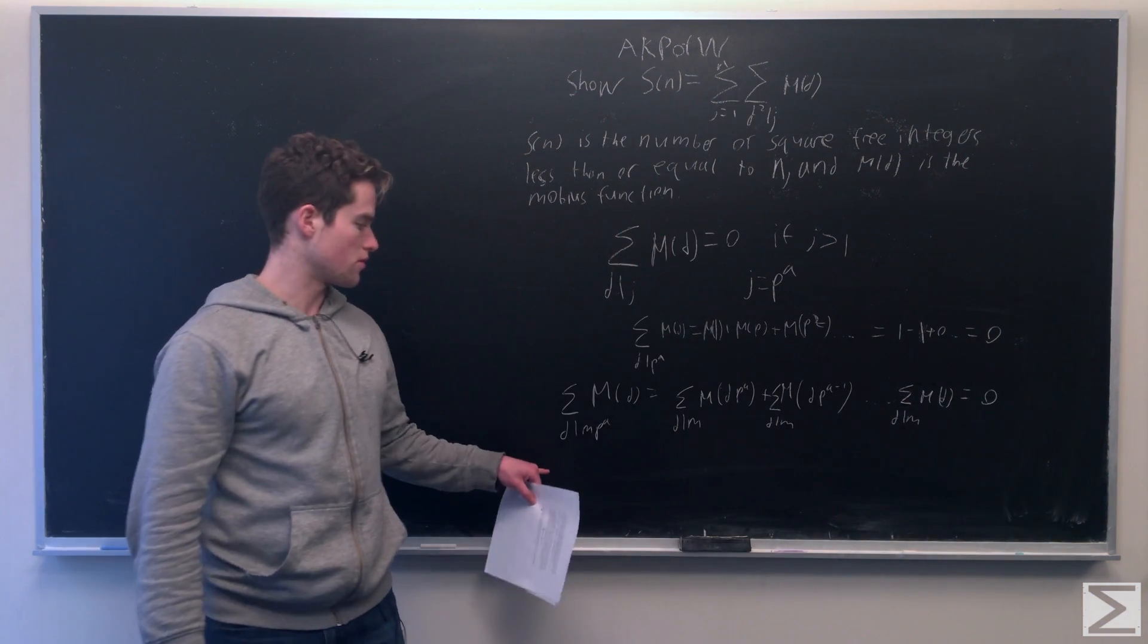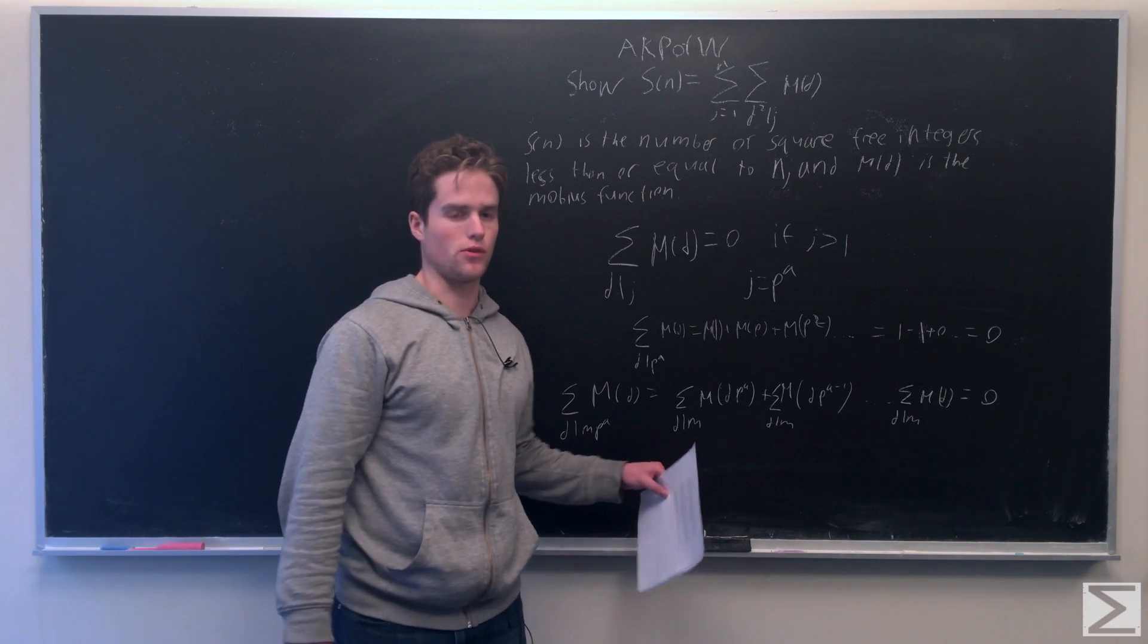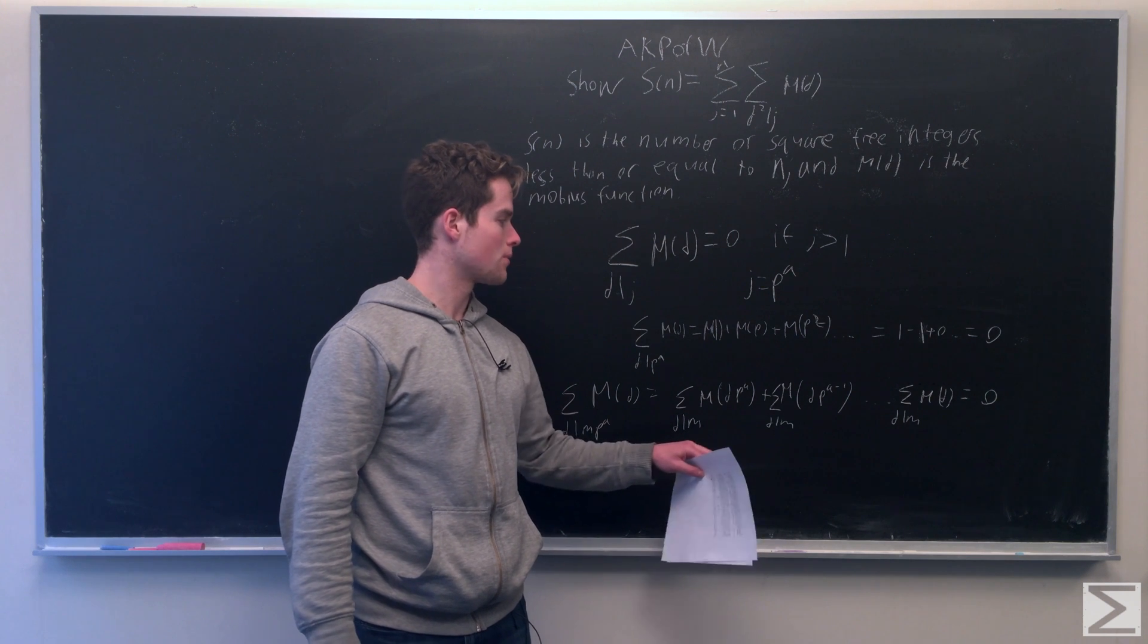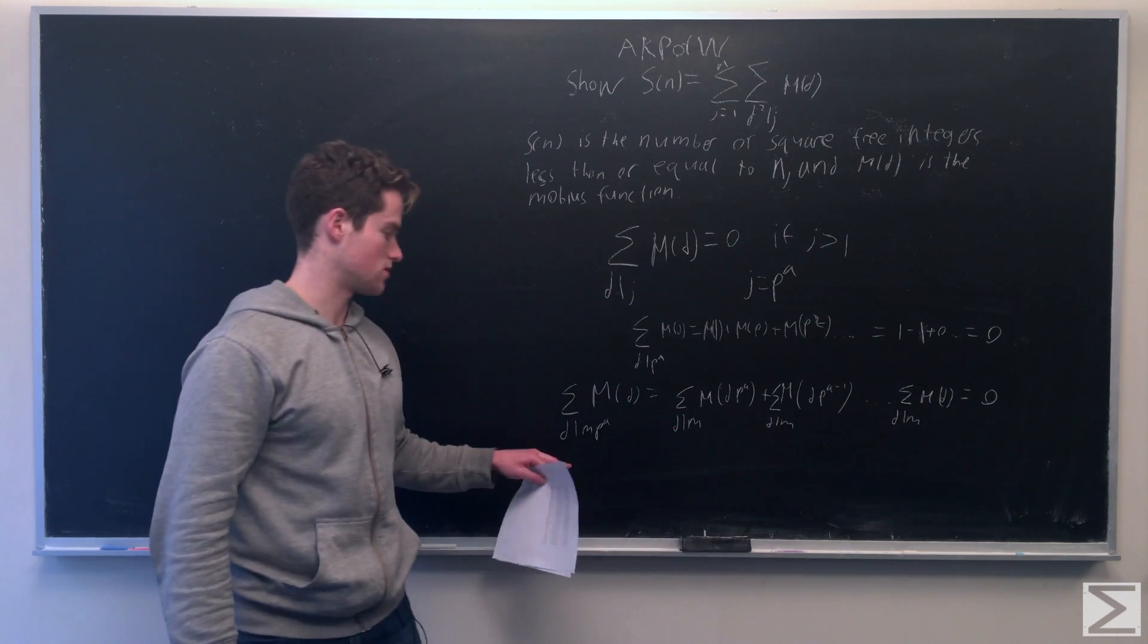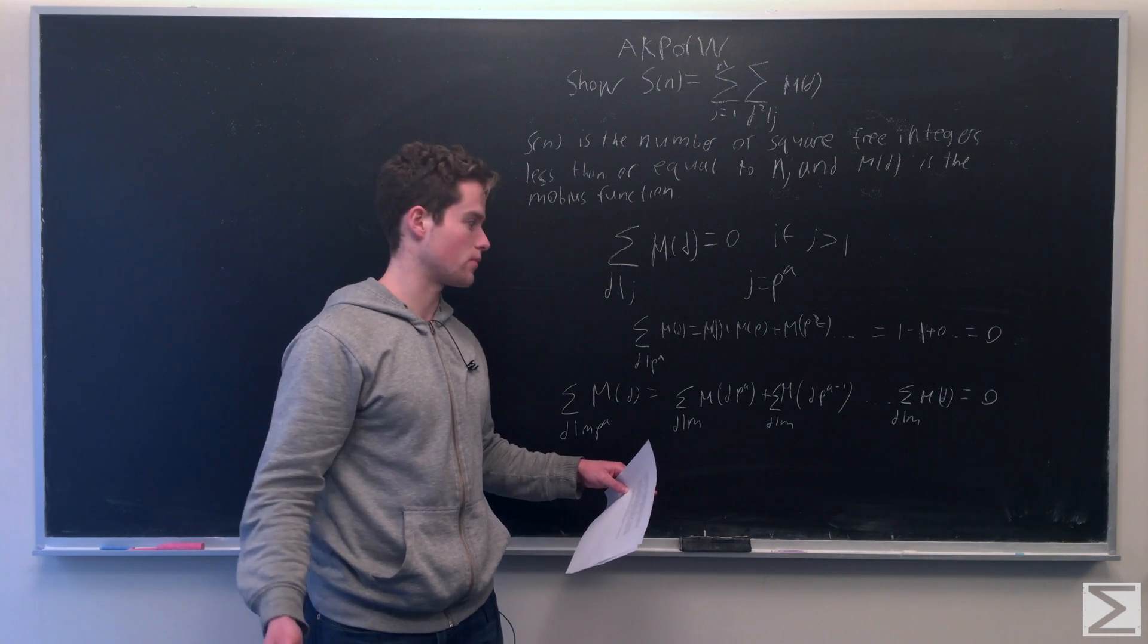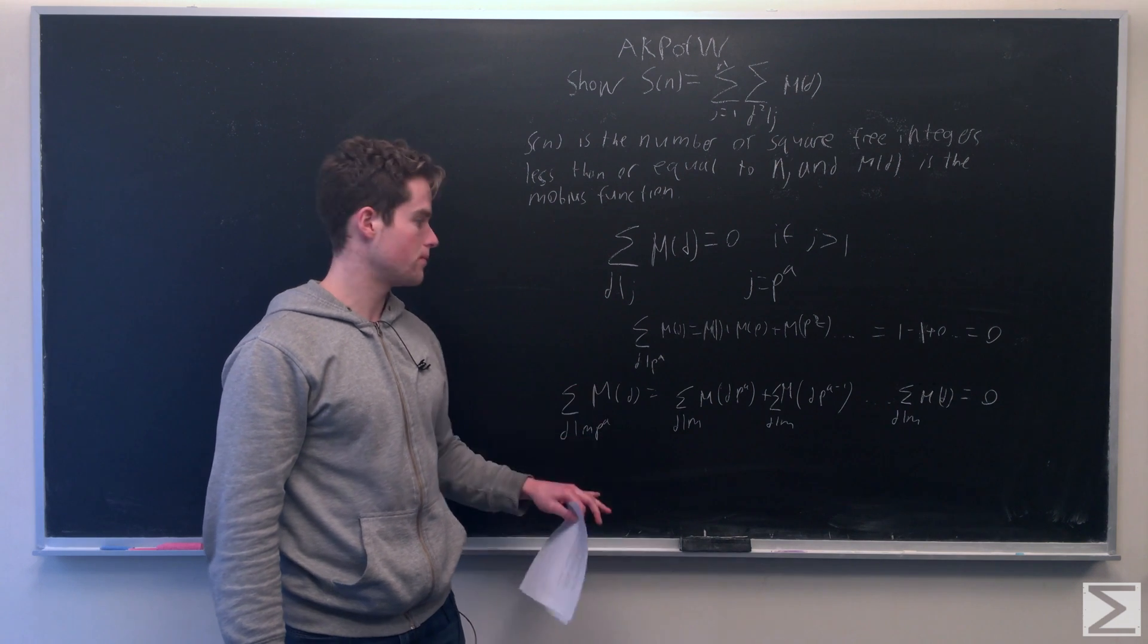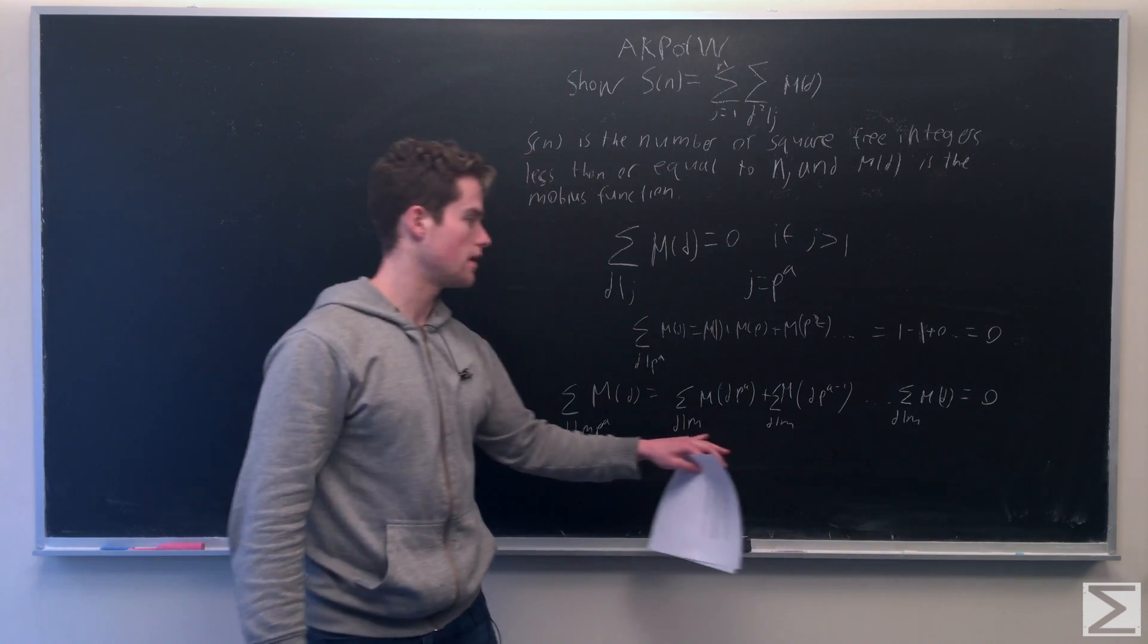So the sum over all d, such that d divides m times p to the a, is equivalent to the sum over all d divides m, of Mobius function of d times p to the a, Mobius function of d times p to the a minus 1, et cetera. So we're splitting this up into divisors, such that divisors have zero powers of p, one power of p, two powers of p, all the way up to a powers of p. But if we assume our sum is 0 for m, then it's going to be 0 for all of these as well.